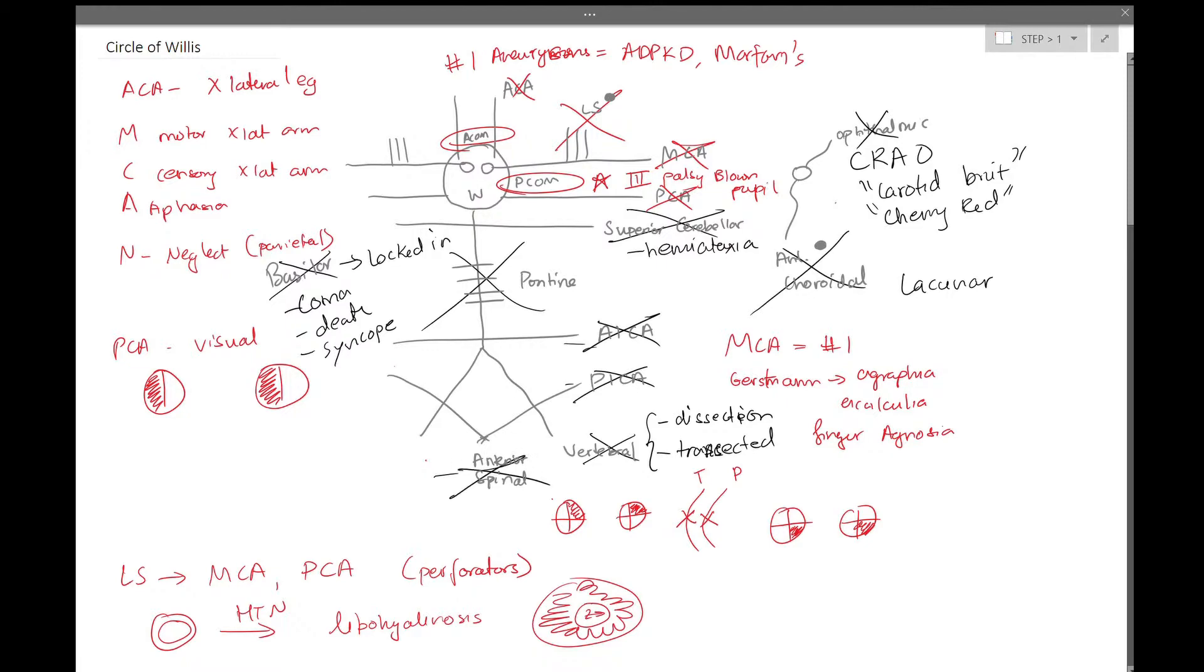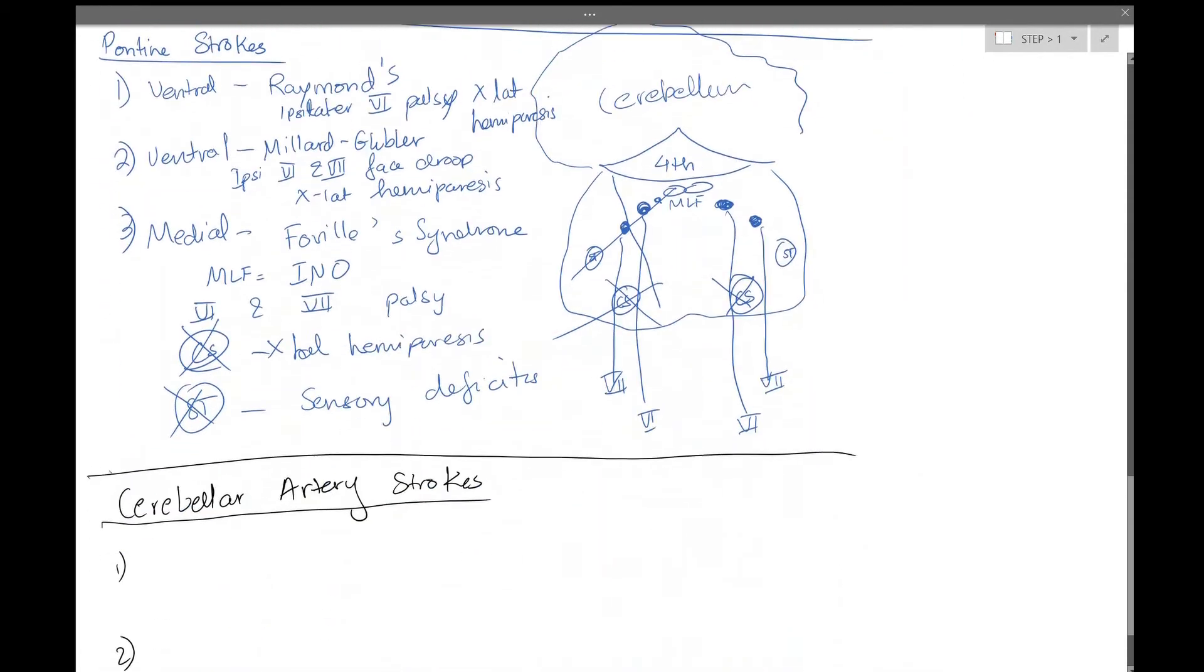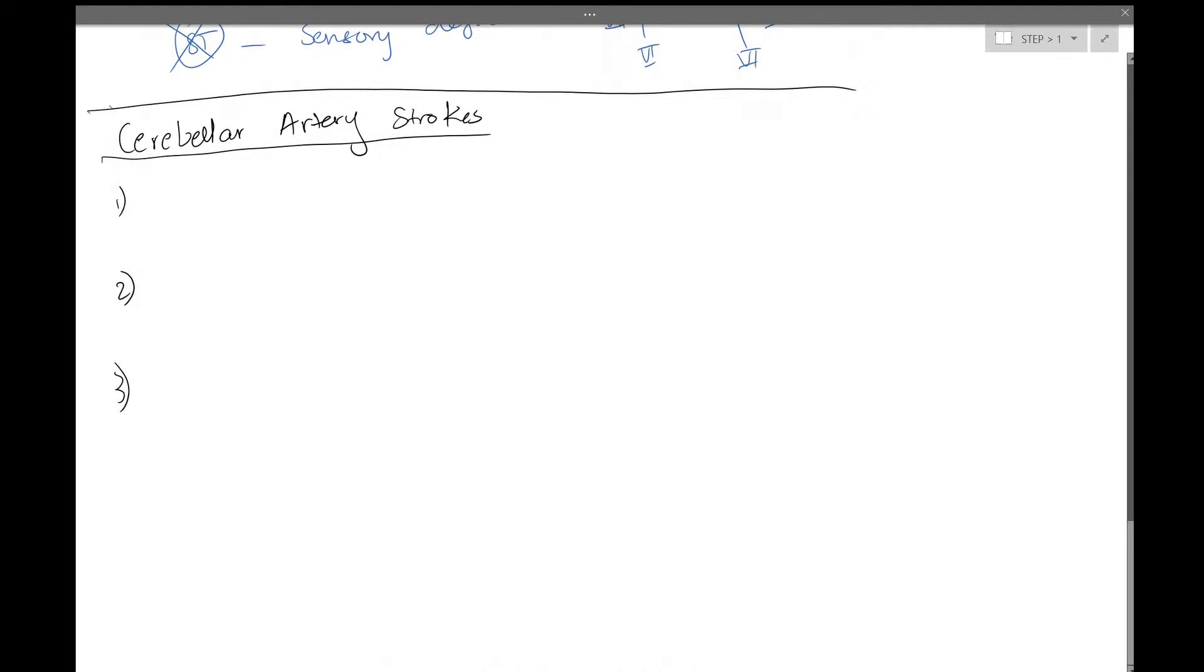This leaves us with AICA, PICA, and the anterior spinal artery. And we're going to discuss these in the final little anatomy review over here.